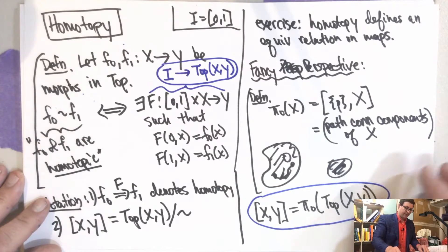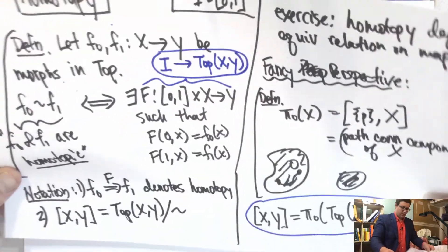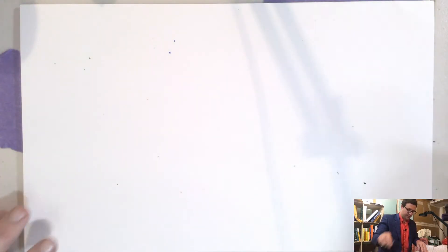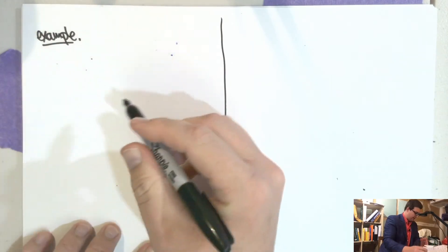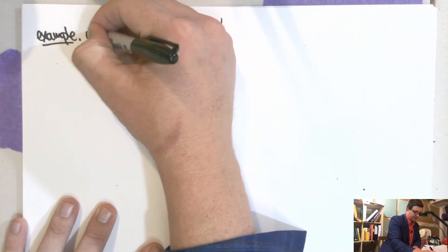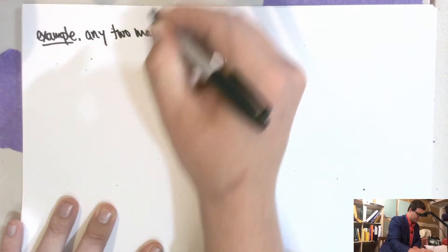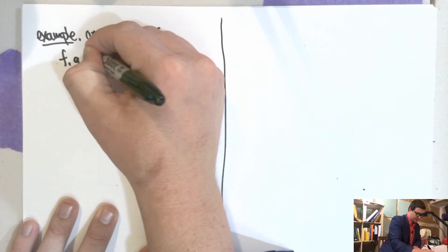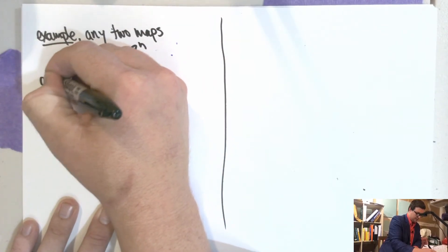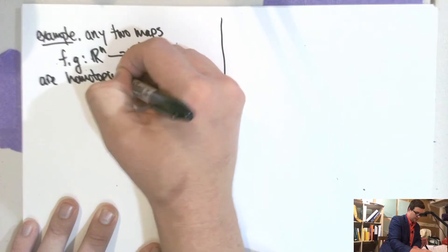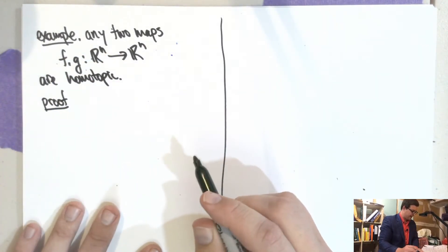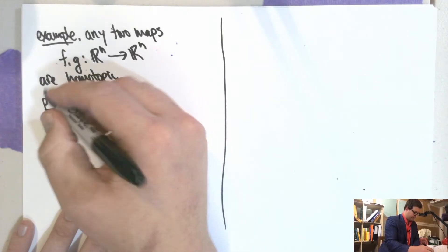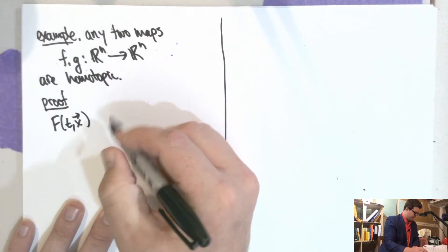All right. That's all I wanted to say about this. So let's do some examples. Let's do some really basic examples just for sanity. So any two maps from RN to RN are homotopic. The proof is that we'll just do this thing that's called a straight line homotopy.